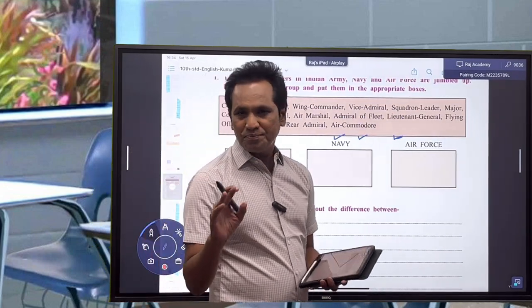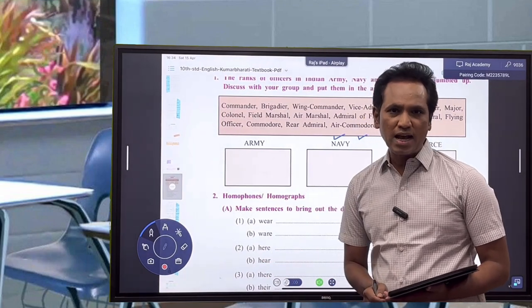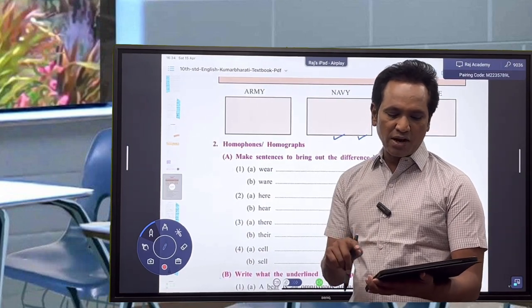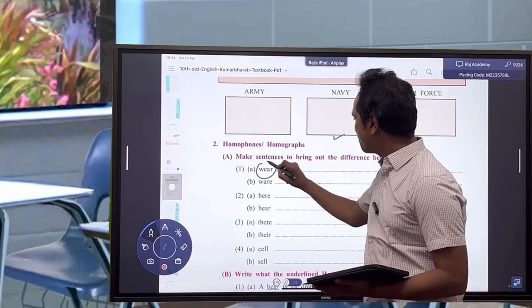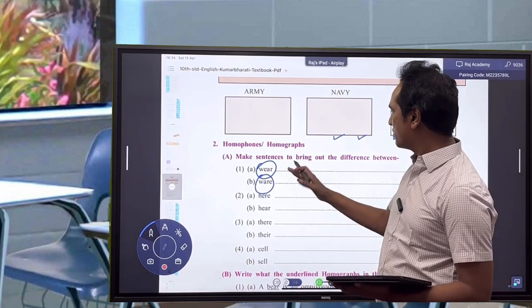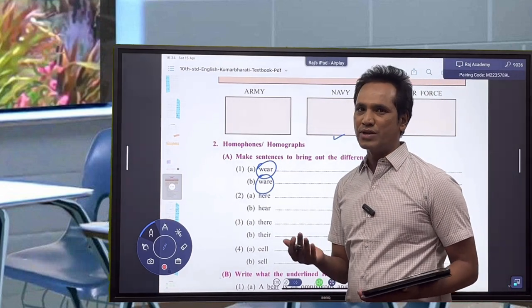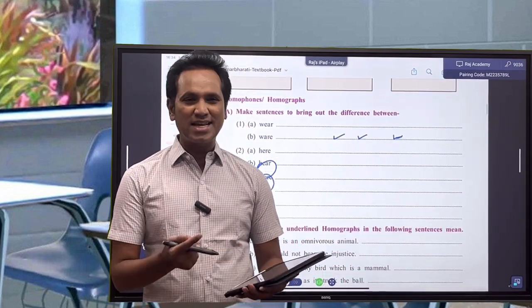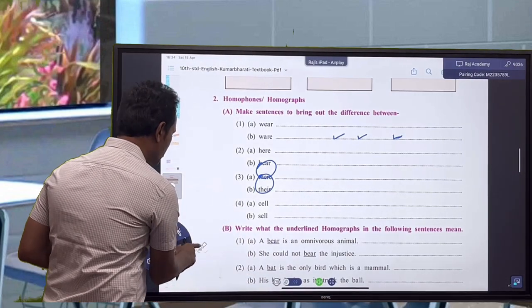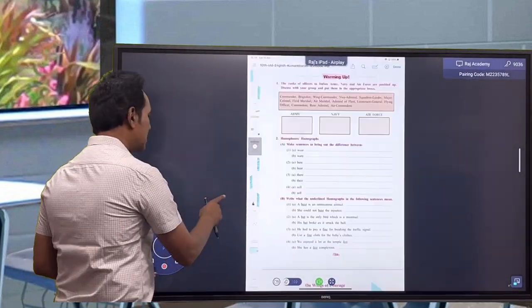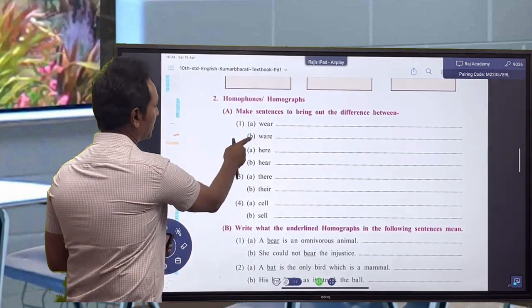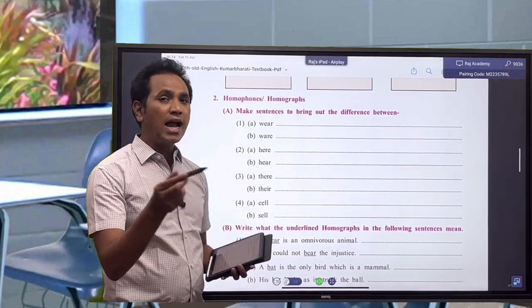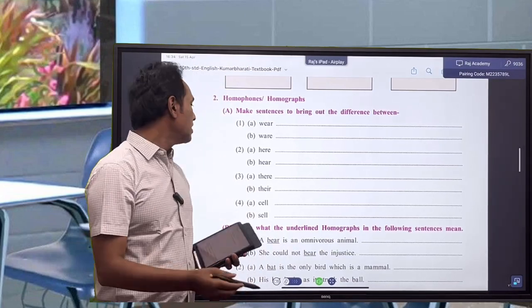Let us move to the more important warming up session, and that warming up session includes homophones and homographs. What are the homophones? Make sentences to bring out the difference between where and wear. These are the homophones or homographs. There's also sail and sale. Only four things are given. Why are they called homophones? These things are called homophones because the spellings are different, and even their meanings are different, but the pronunciations are the same.